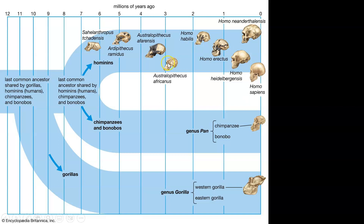You can see it in the diagram: chimpanzees and bonobos split here, and this is where the hominins branch off. The hominids all split further, with gorillas splitting from us even earlier.